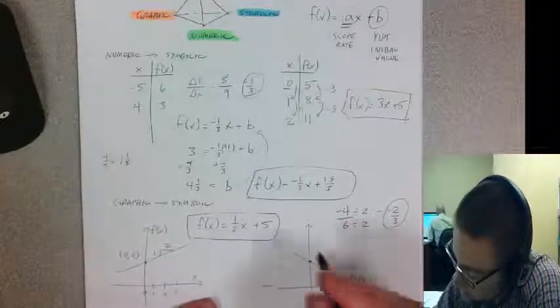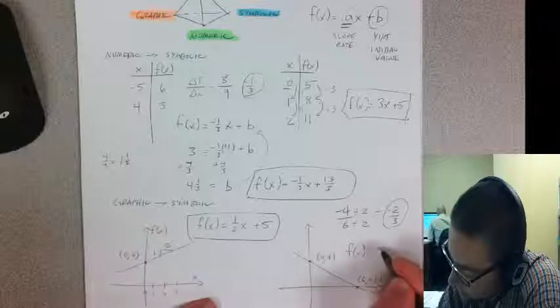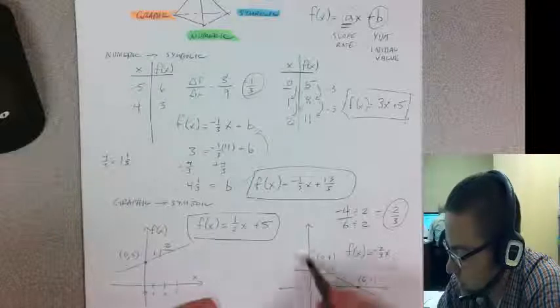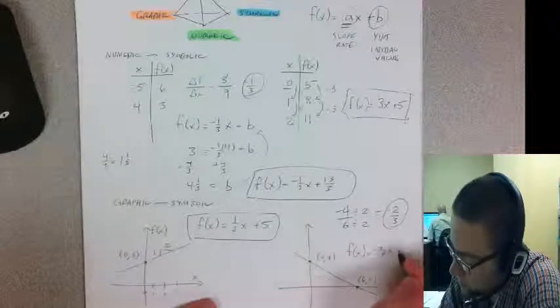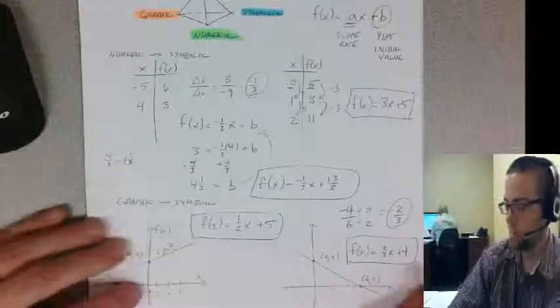reduce that fraction by dividing top and bottom by two, so I get -2/3 as the slope. My function value f(x) = -2/3 x, and my initial value when x equals zero is four, so plus four. That is the symbolic representation.